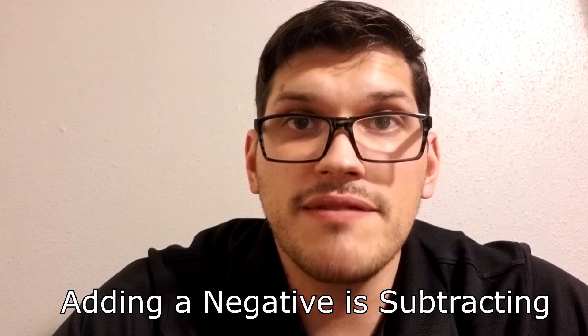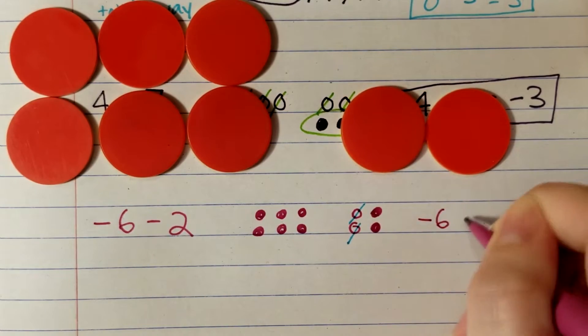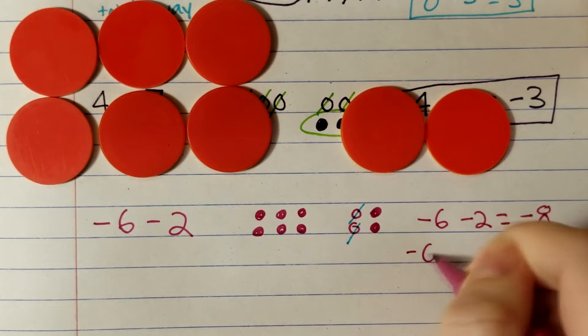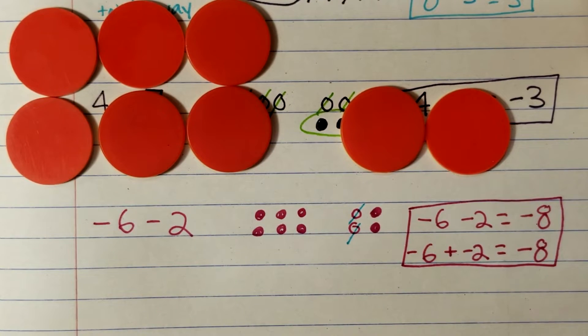Wait a second. This sounds like a problem we just did with adding. You're right. Look back at negative six plus negative two. Remember, adding a negative is the same as subtracting. We can now see that negative six minus two is the same as negative six plus negative two. They both equal negative eight.